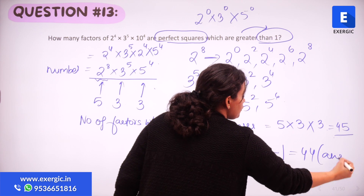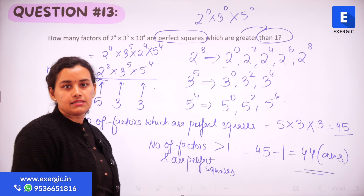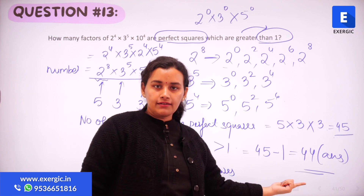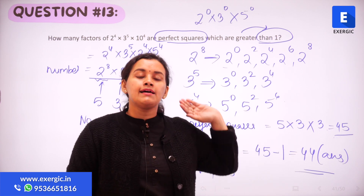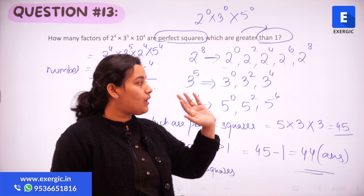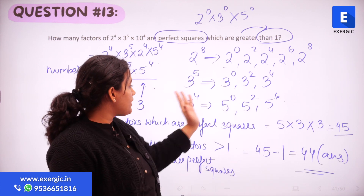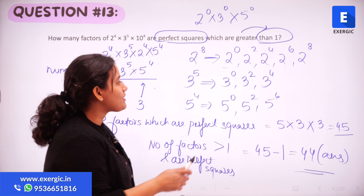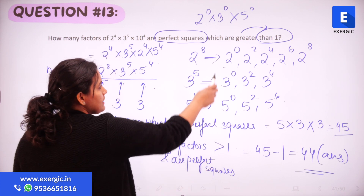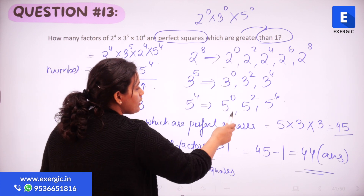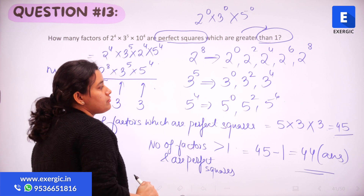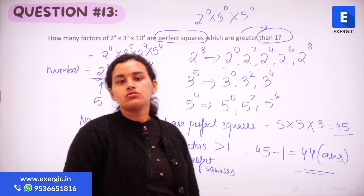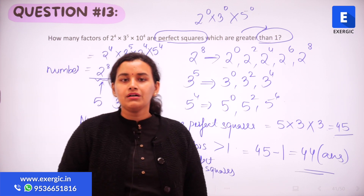The minus 1 accounts for excluding the case where the powers of 2, 3, and 5 are all zero — that is, 2 raised to the power 0, 3 raised to the power 0, and 5 raised to the power 0, which gives the factor 1.